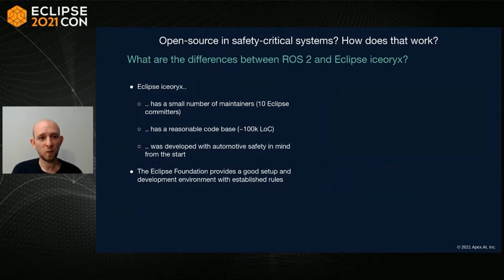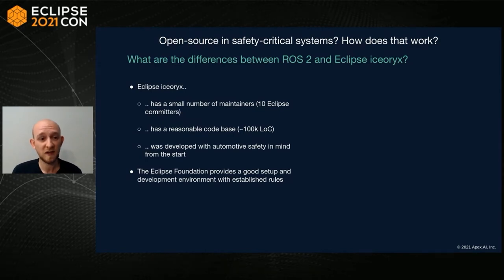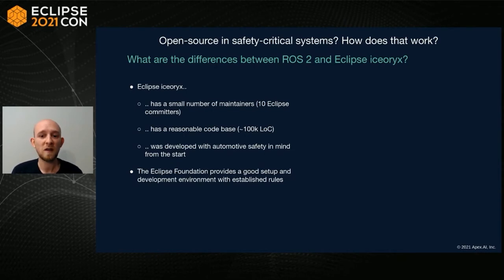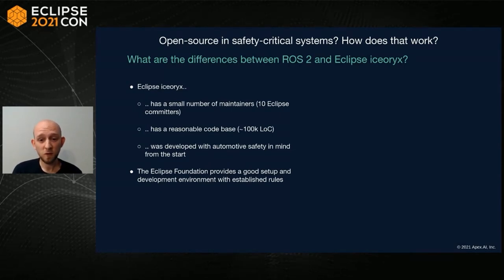What are the differences between ROS 2 and Eclipse iceoryx? iceoryx has a very small number of maintainers — currently only 10 Eclipse committers who approve and merge pull requests and are in control of the project. It has a reasonable code size of about 100k lines of code. It was developed with automotive safety in mind from the start — for example, most of the code is already memory-static to avoid memory fragmentation and out-of-memory problems. The Eclipse Foundation also provides a good development environment with established rules. The conclusion: let's develop and maintain Eclipse iceoryx in the open together with the community.